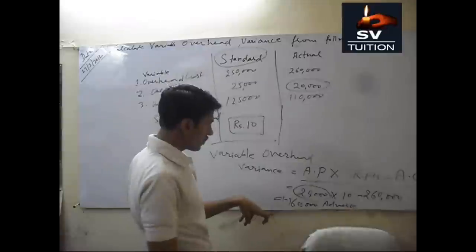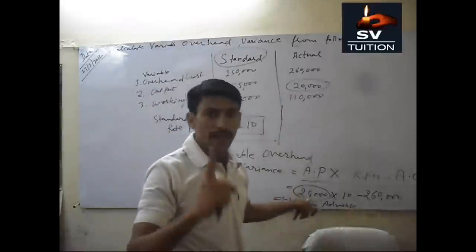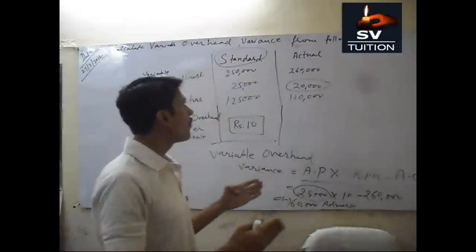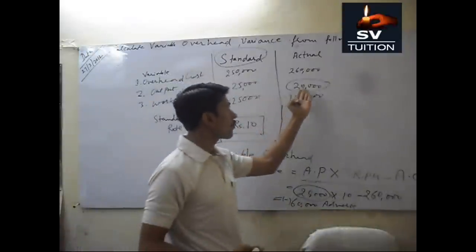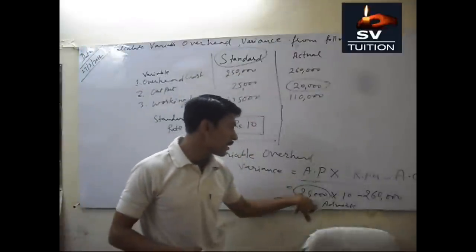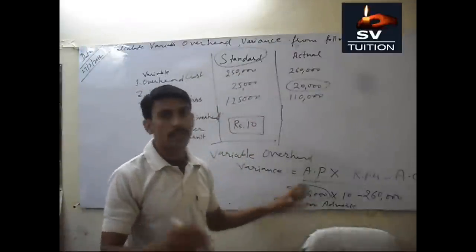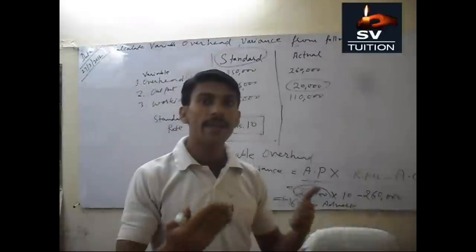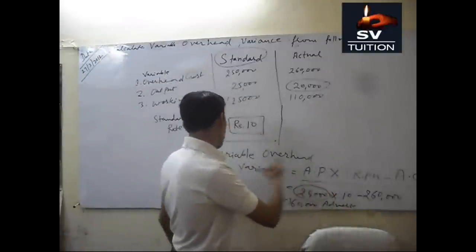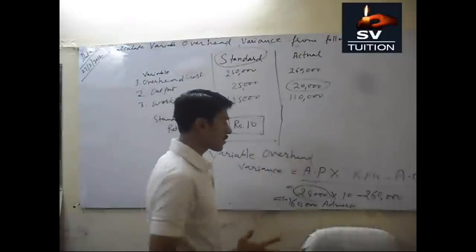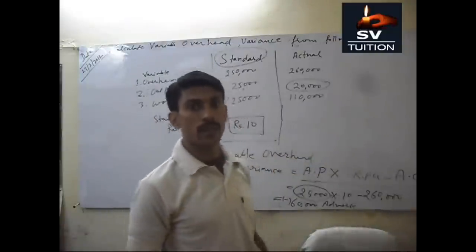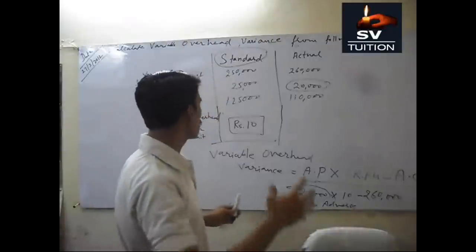This is 2 lakh minus 2 lakh 60,000. Suppose if our actual production is 30,000, then it will be 3 lakh. At that time our variable overhead variance will be positive with 40,000 — because with the same expenses and same rate, we produced 30,000 units.